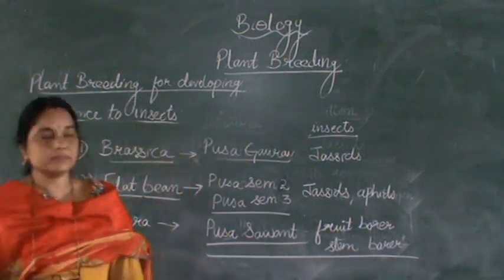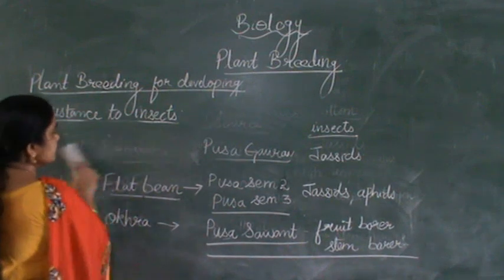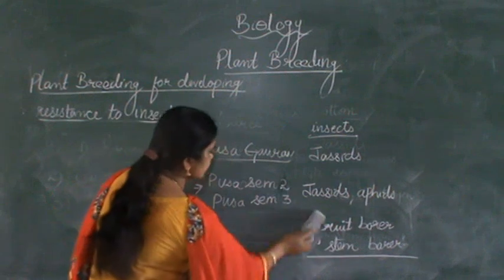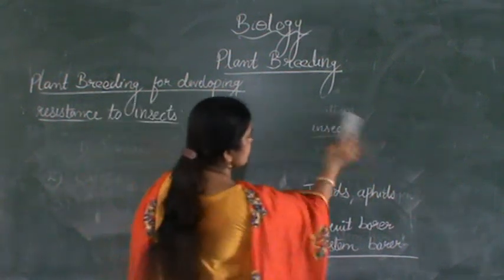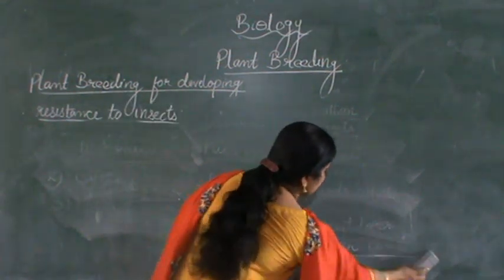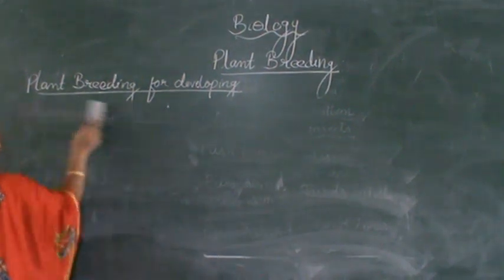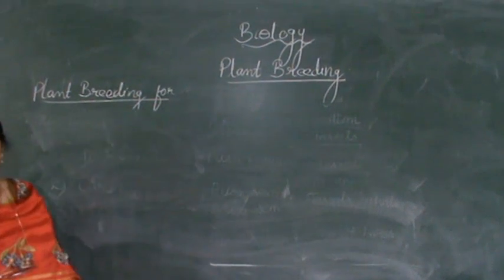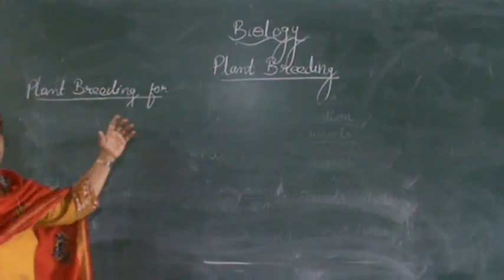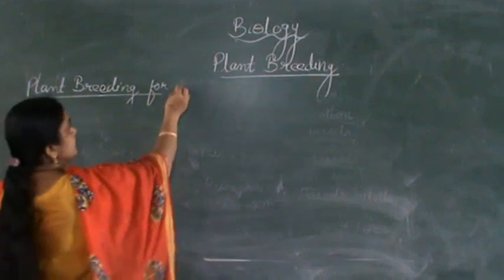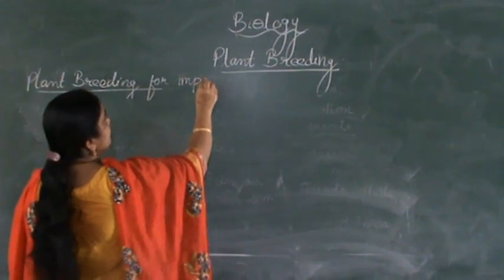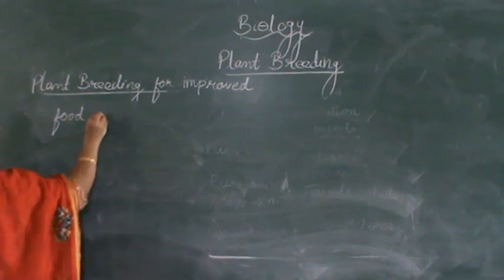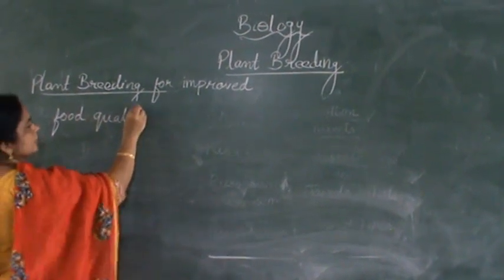These examples are very important and can be asked in multiple choice questions. Next we will see plant breeding techniques. The other category is nothing but plant breeding for improved food quality.